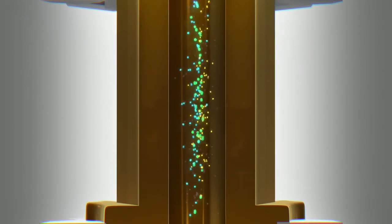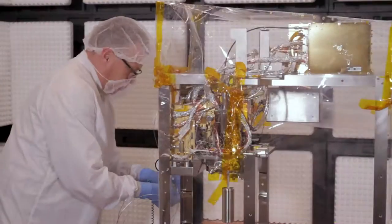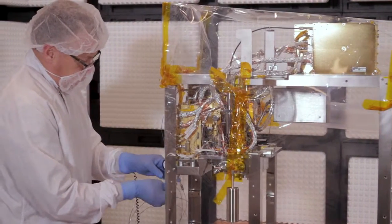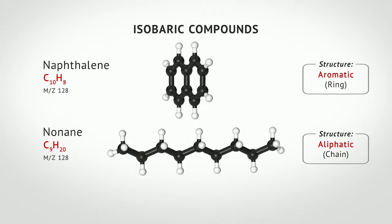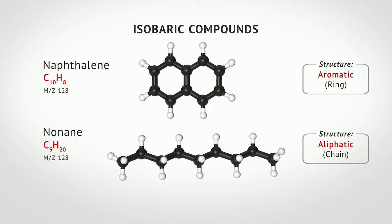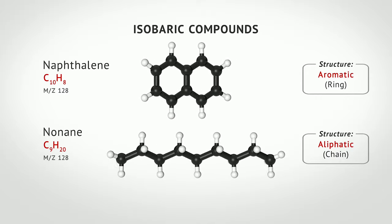Another technique is tandem mass spectrometry, or MS-MS, which identifies large molecules by breaking them apart and analyzing their fragments. By combining SWIFT and MS-MS, MOMA can determine an individual molecule's formula and its structure, both important criteria in the search for life.